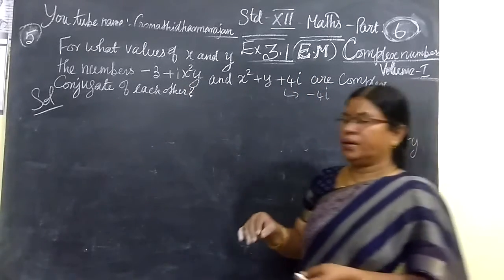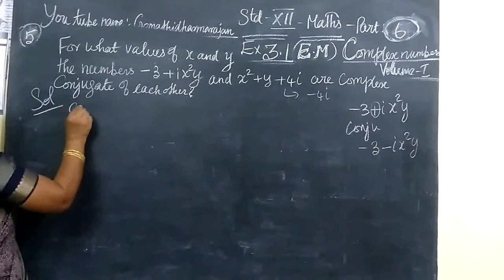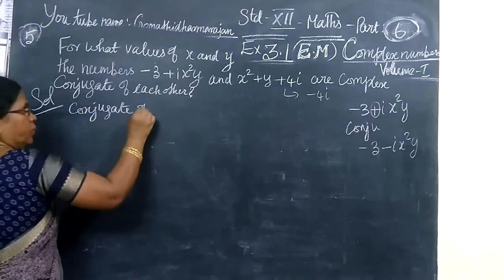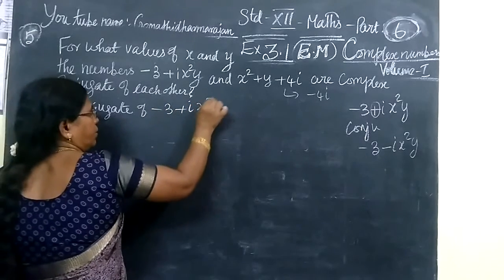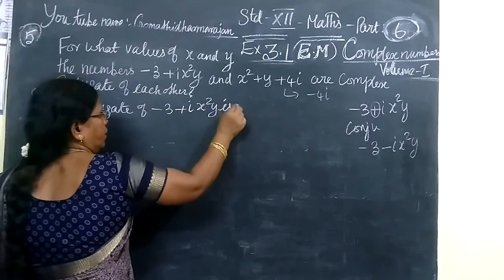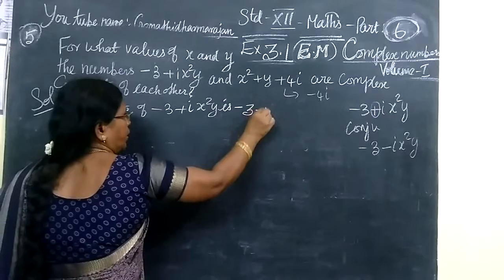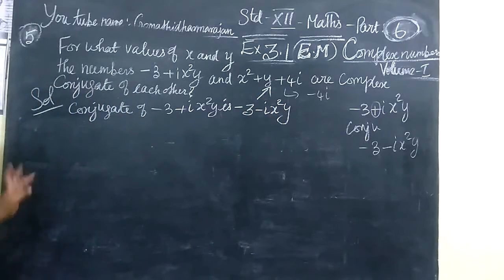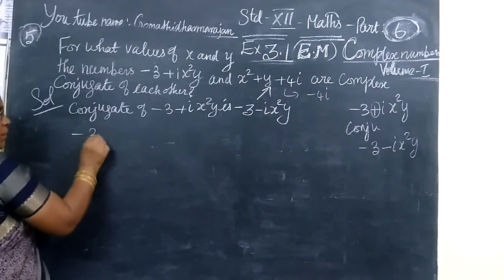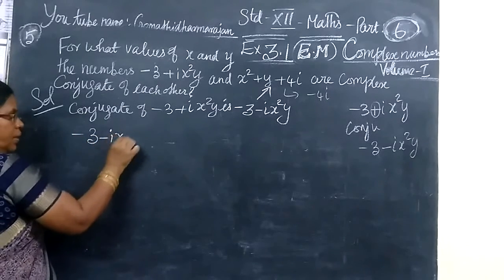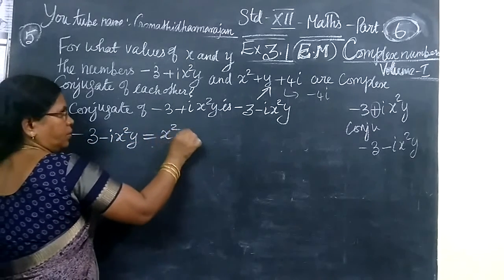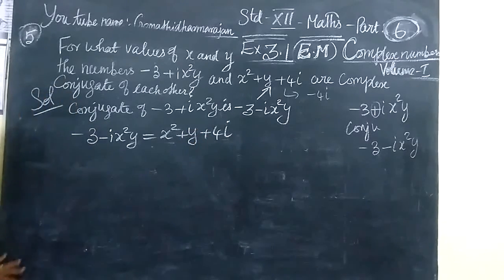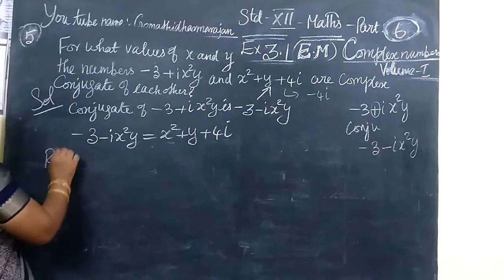We are taking anyone and equating the conjugate of minus 3 plus i times y, which is minus 3 minus i times y. We are equating to the second term. So minus 3 minus i times y is equal to x times y plus y plus 4i.